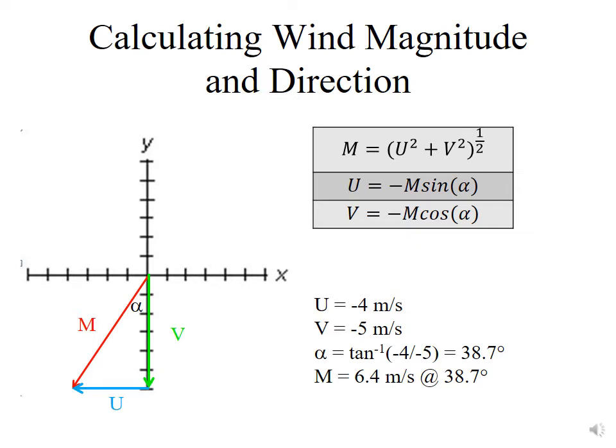Overall, the magnitude of this particular wind is 6.4 meters per second, and it happens to be coming from 38.7 degrees, indicating that it's a northeasterly wind.